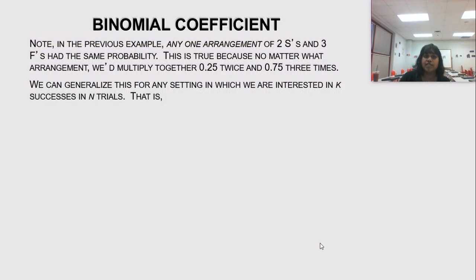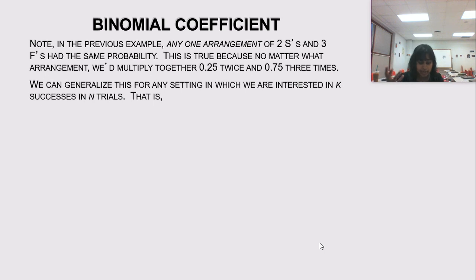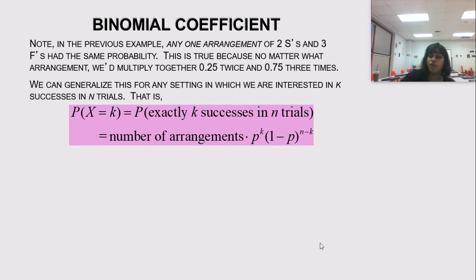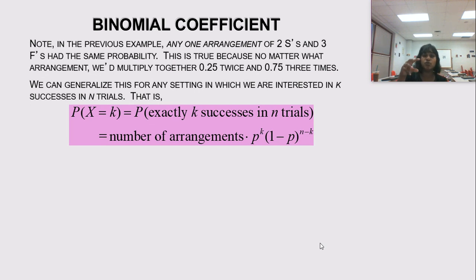In that previous example, any arrangement of two successes and three failures had the same probability, and we multiplied by the total number of combinations. Based on this pattern, we can generalize: the probability that a binomial random variable X equals k is the number of arrangements times P to the k times (1 minus P) raised to the (N minus k), where k is the number of successful trials.